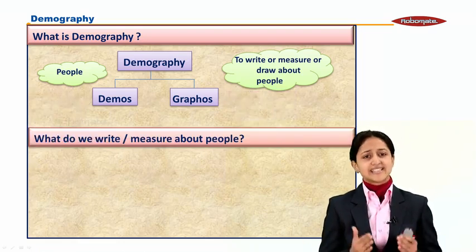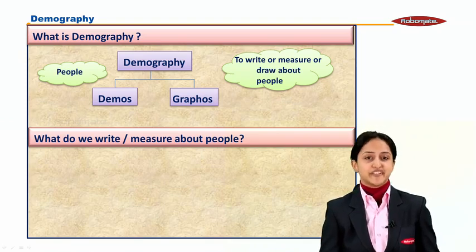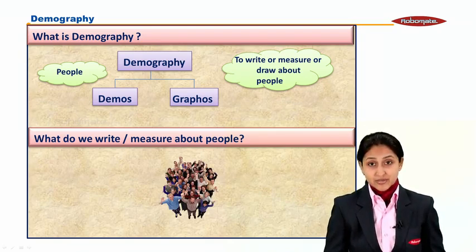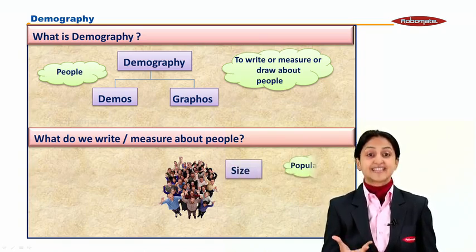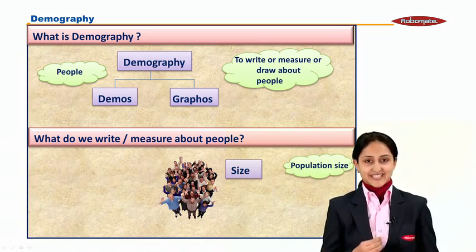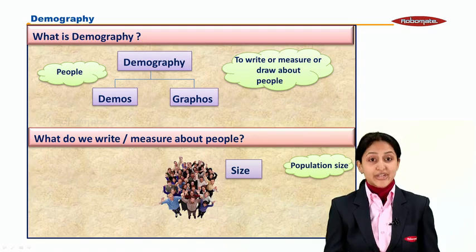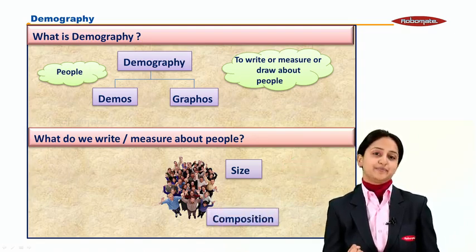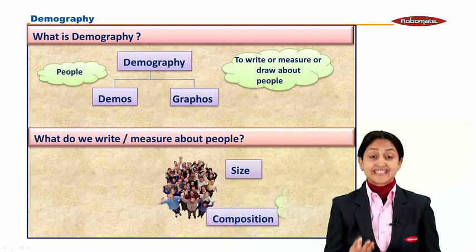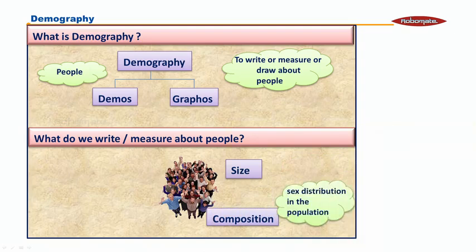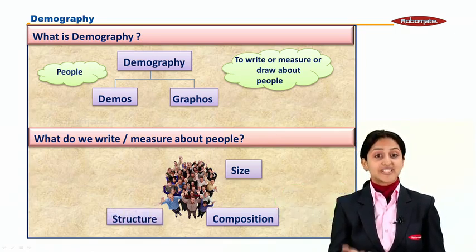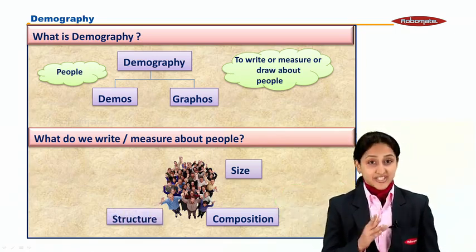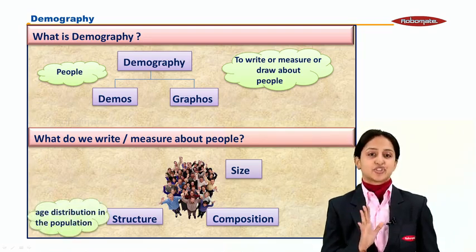What is that something which we are measuring about people in demography? When I have a group of individuals, I would like to know the size of the group — that is the size of my population. Once I know the size, I would also be interested to know the composition of my group. Composition means the sex distribution or the male-female ratio in my population. Knowing the size and composition, I would like to know the structure of my population.